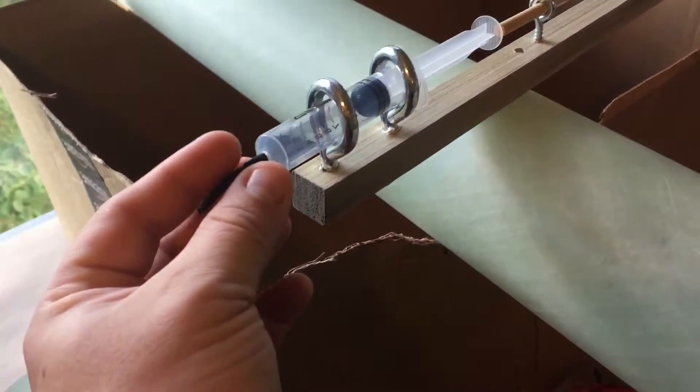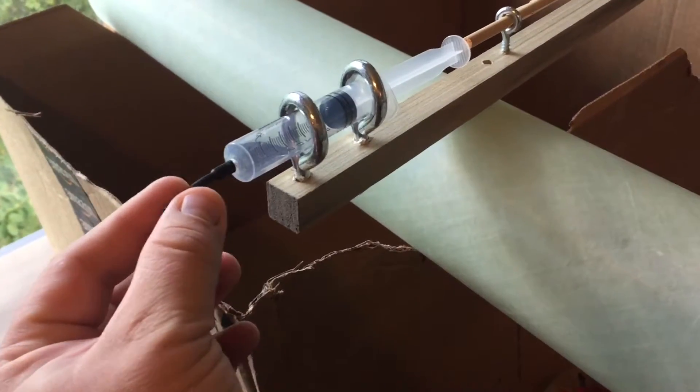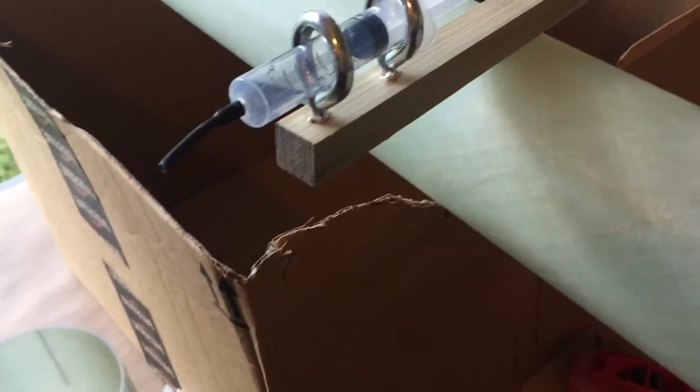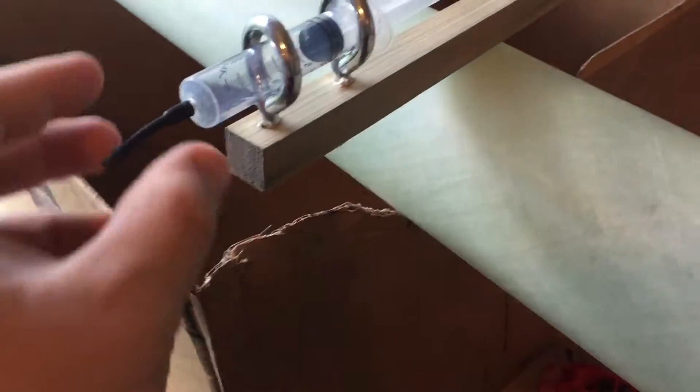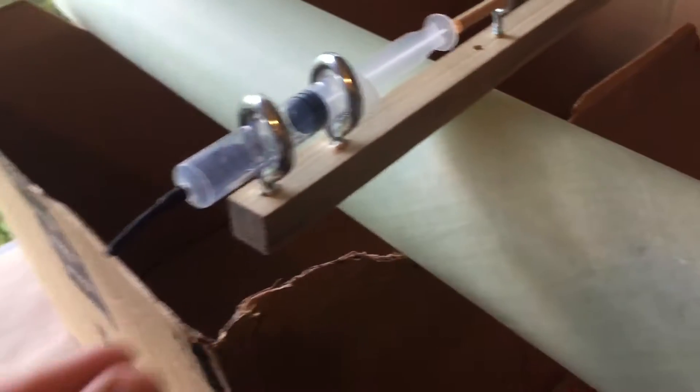So I used 3/16 heat shrink tubing that shrinks down to 3/32. It shrinks right on there. If it comes off, you can just pop a drop of CA on there and it'll hold.